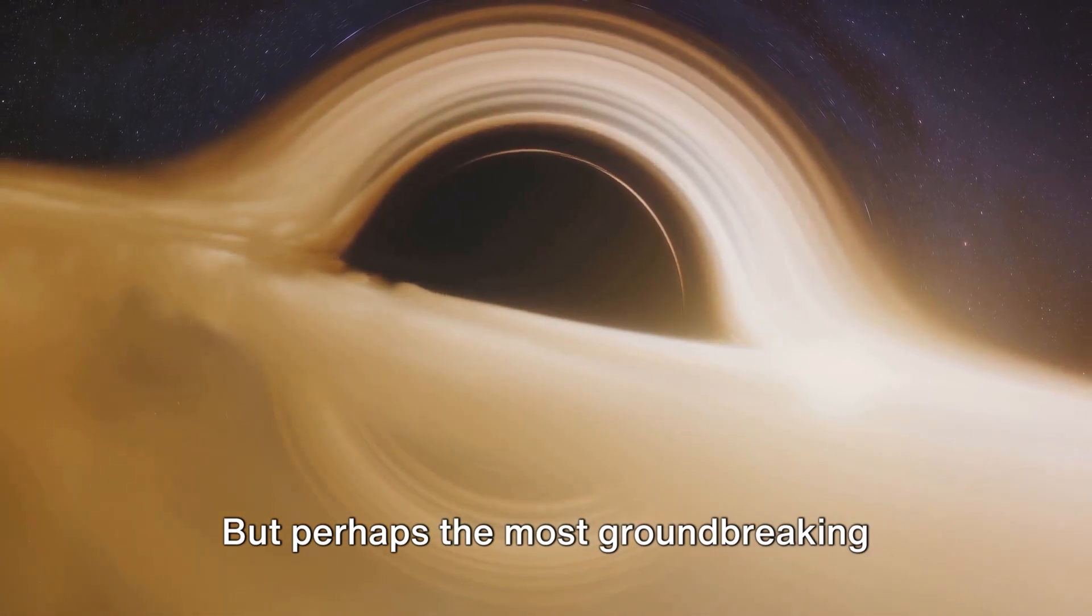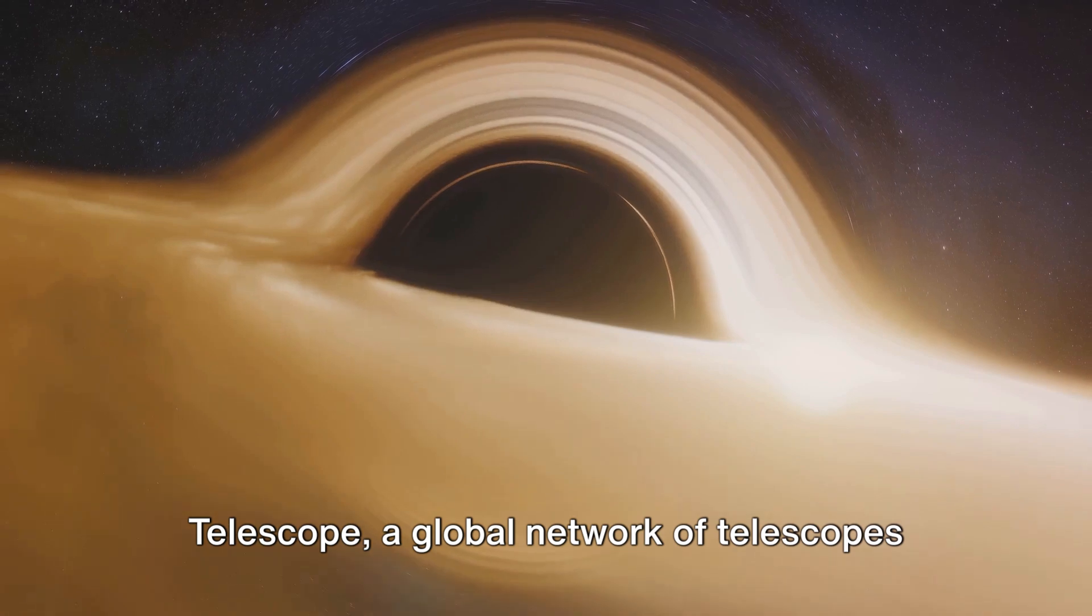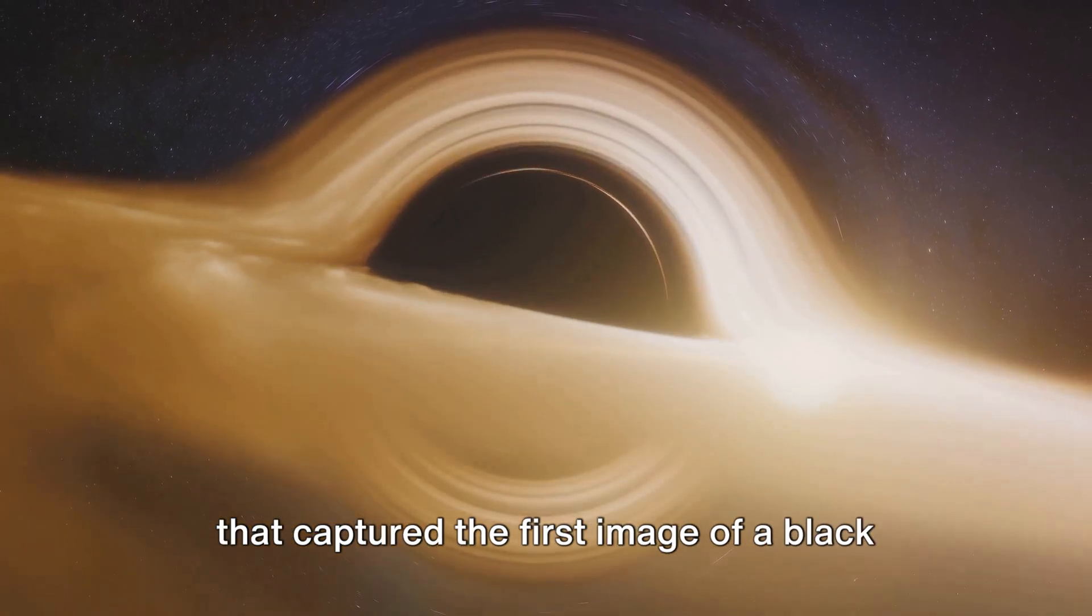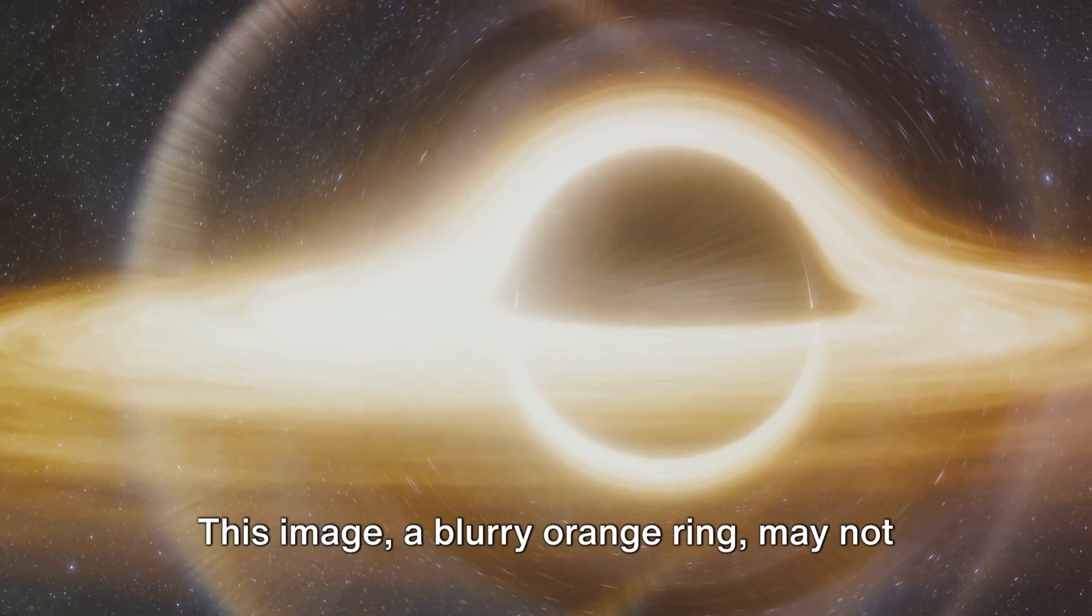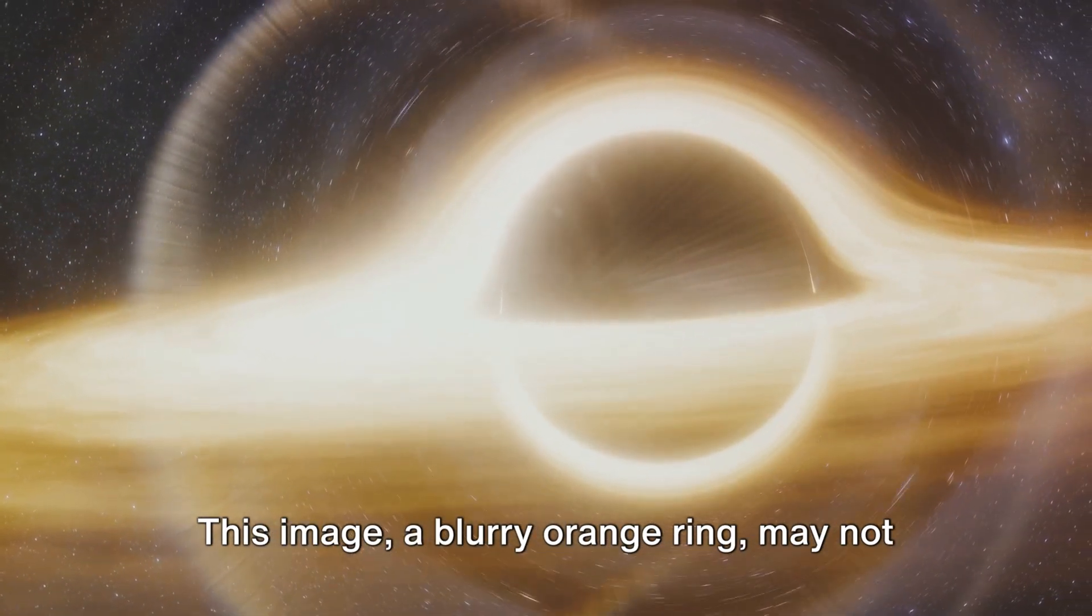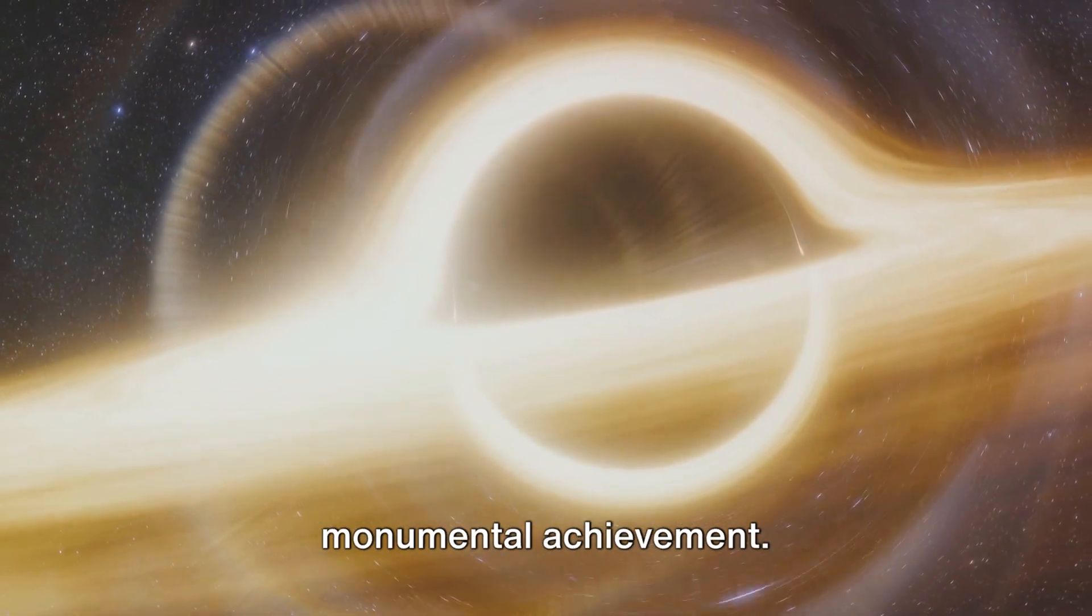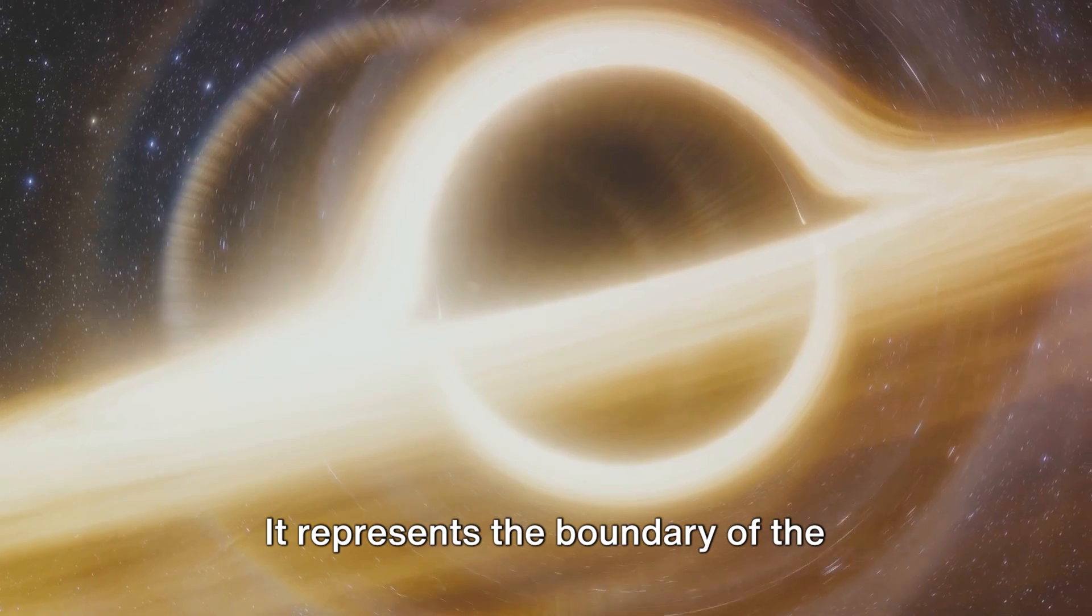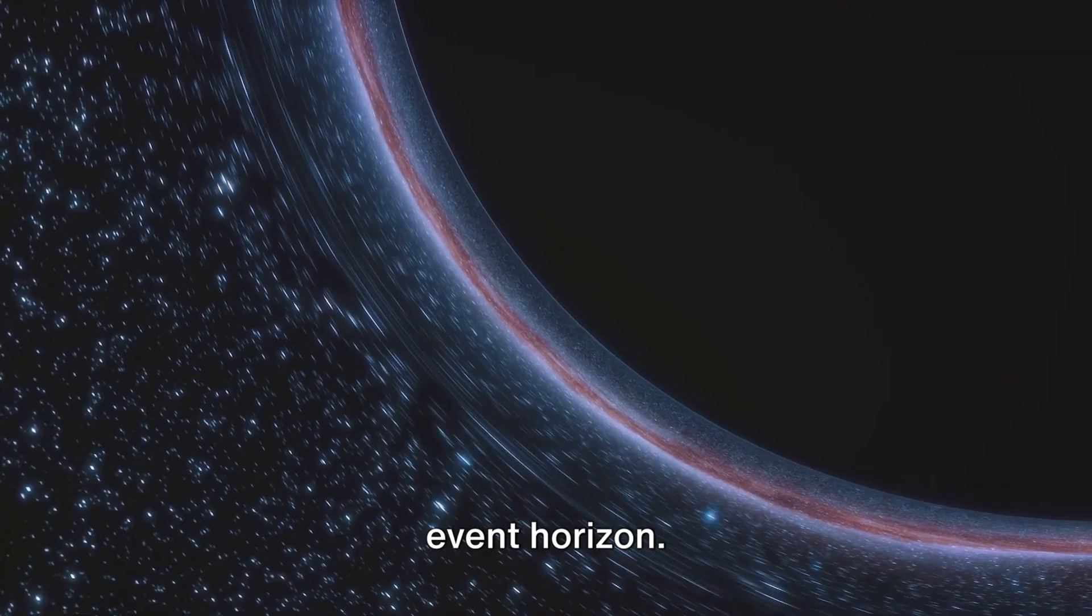But perhaps the most groundbreaking method is the use of the Event Horizon Telescope, a global network of telescopes that captured the first image of a black hole's event horizon in 2019. This image, a blurry orange ring, may not seem like much at first glance, but it's a monumental achievement. It represents the boundary of the unobservable, the point of no return, the event horizon.